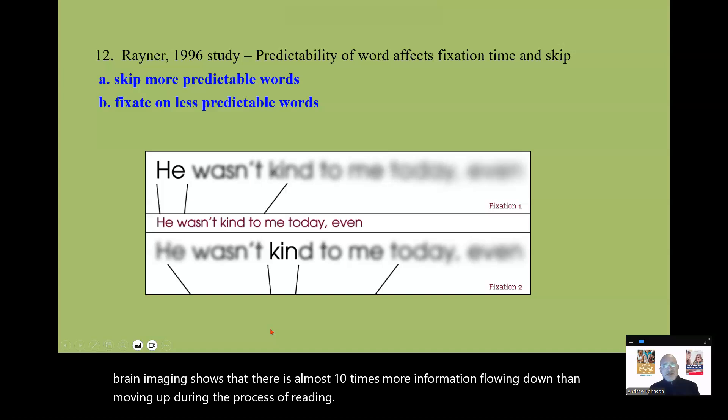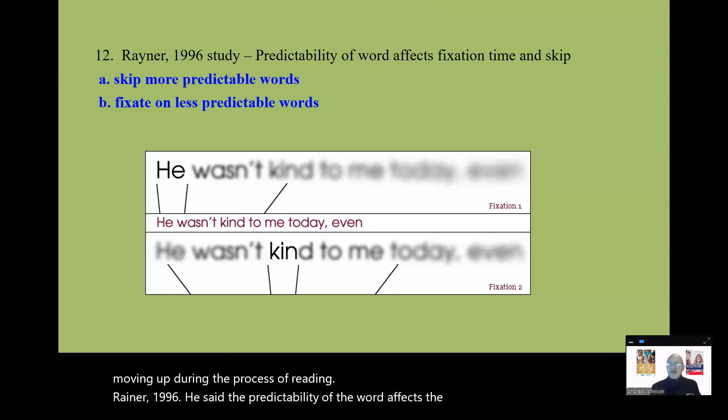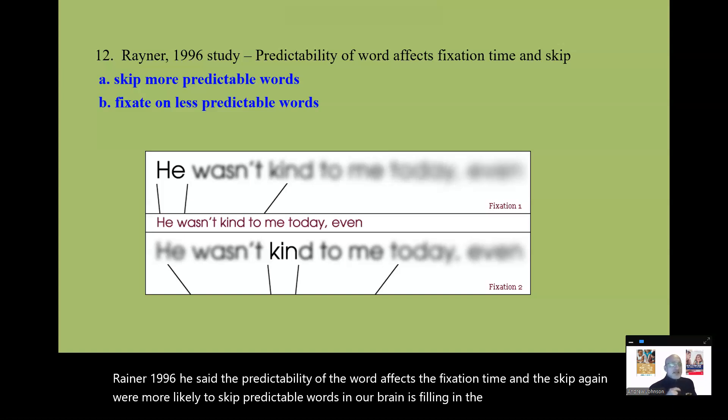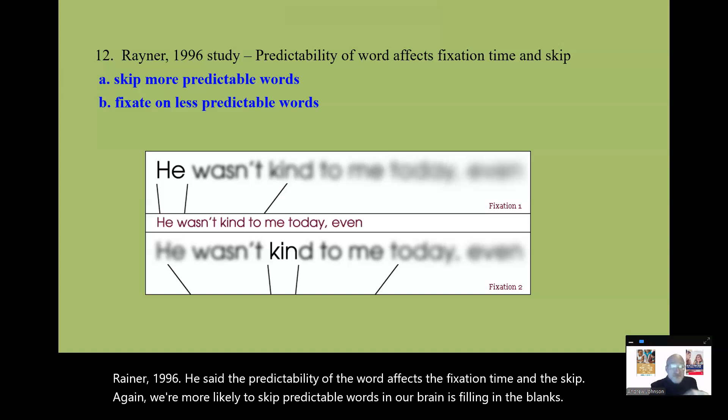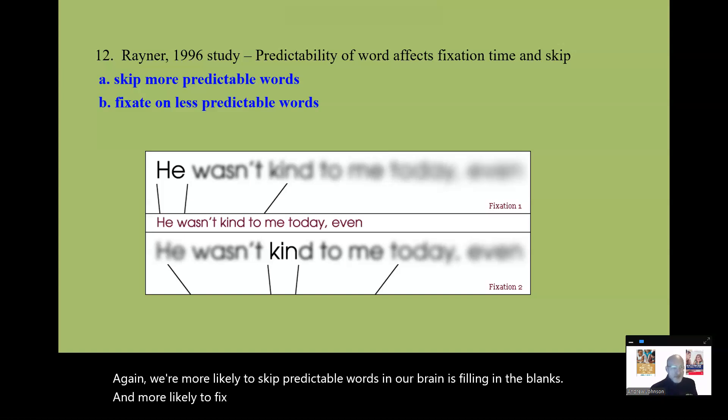Rainer, 1996. He said the predictability of the word affects the fixation time and the skip. Again, we're more likely to skip predictable words, and our brain is filling in the blanks, and more likely to fixate on less predictable words.